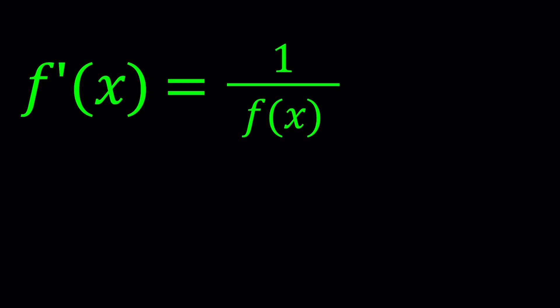We have a function f of x and we have this equation f prime of x equals 1 over f of x. So in other words, this is a special type of function whose derivative equals its reciprocal.